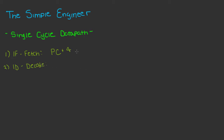The second stage is the ID stage — the Instruction Decode stage. When we have that arbitrary instruction brought in, we need to know what it is. The CPU will read in the associated opcode to determine the instruction.